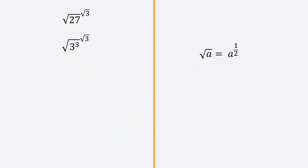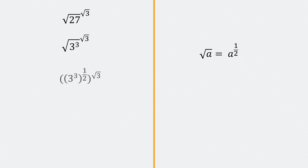The next thing we will do is apply the rule of exponents which tells us we can write a square root as an exponent of half. So applying this rule, the square root of 3 cubed now becomes 3 cubed to the exponent half.